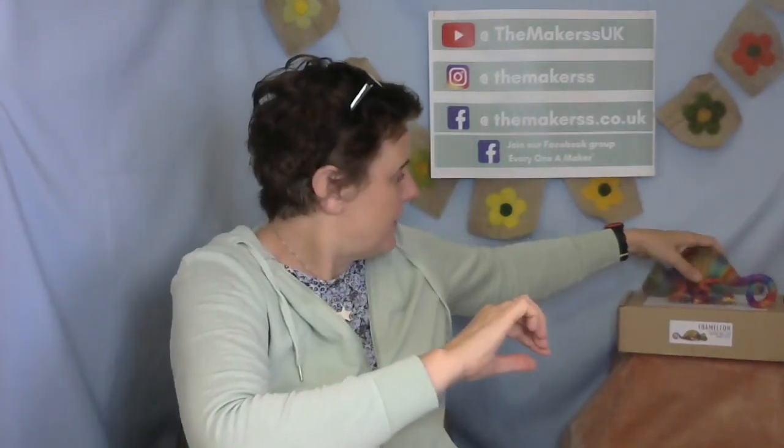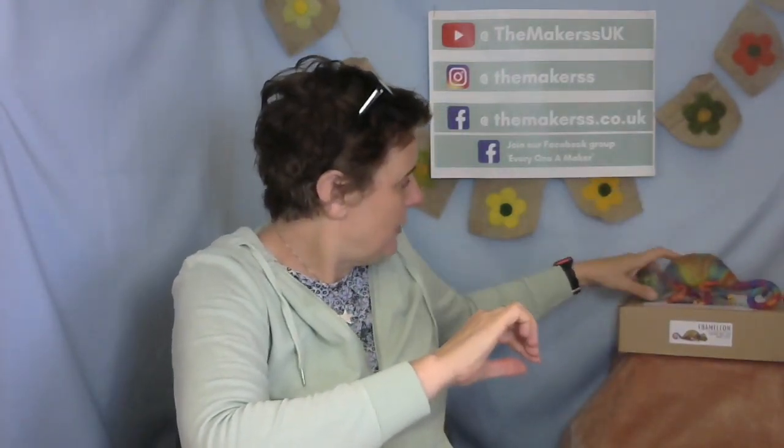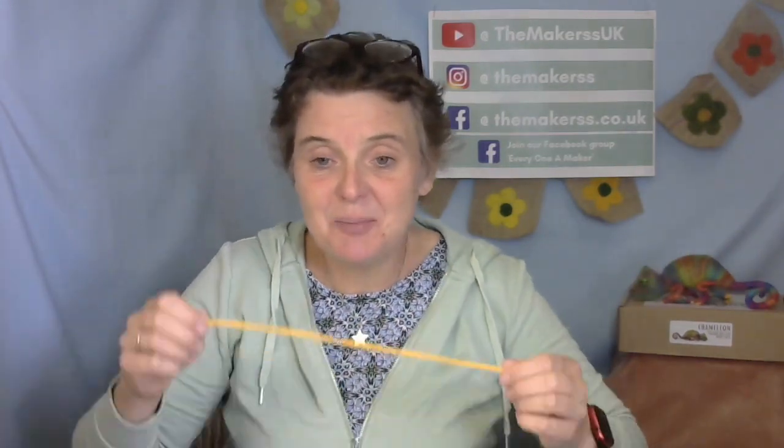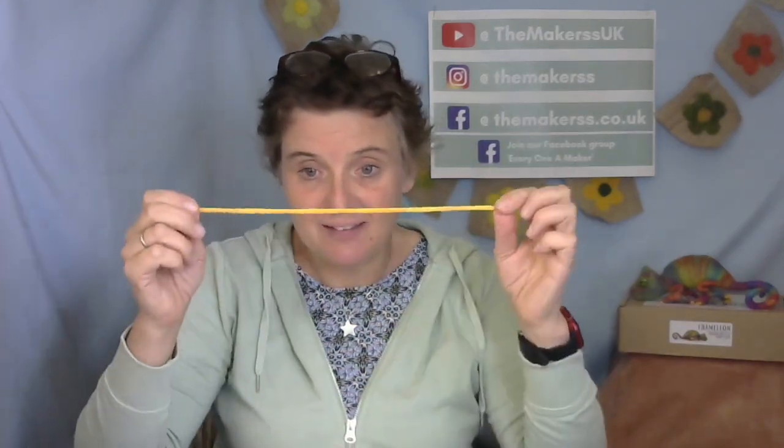So let's start by making this curly-whirly tail here. For this you have in your box, it doesn't matter whether you use the pipe cleaners that are in the box which are all yellow or whether you use any other pipe cleaners. I'm going to stick with yellow and you will need some of the colorful wool tops that will come in your Makers box.